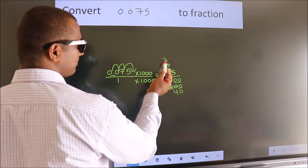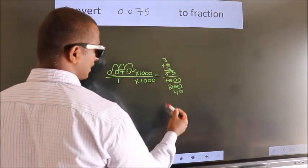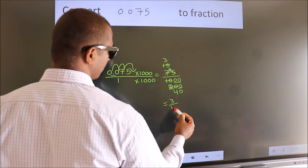Further cannot be simplified. So, our fraction is 3 by 40.